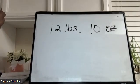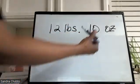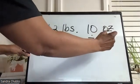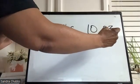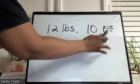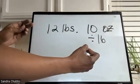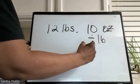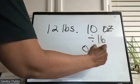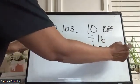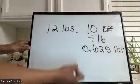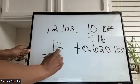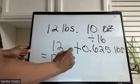Here's our next one: 12 pounds, 10 ounces. We start with the ounces, converting those to pounds. We divide by 16. So 10 ounces divided by 16, that gives us 0.625 pounds. And we add that to the 12 here, and that would give us 12.625.